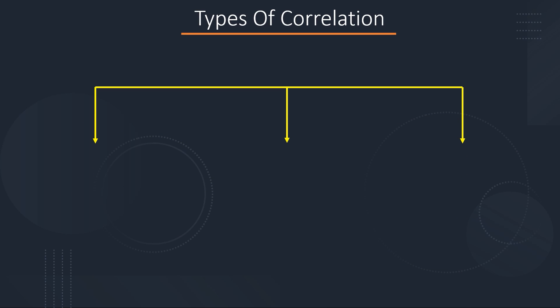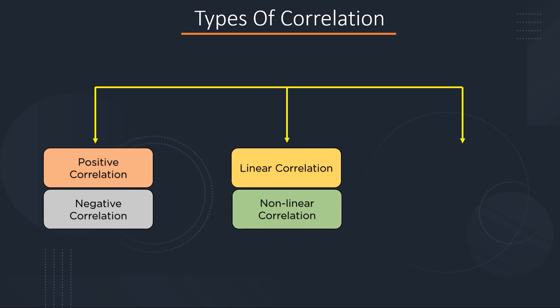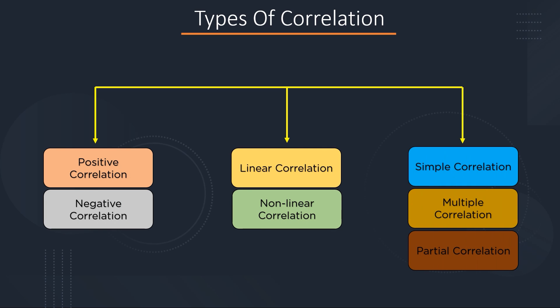There are mainly three categories of correlation. The first one is positive correlation and negative correlation. The second one is linear and nonlinear correlation. And the third one is simple, multiple, and partial correlation. Let's discuss each of them one by one.